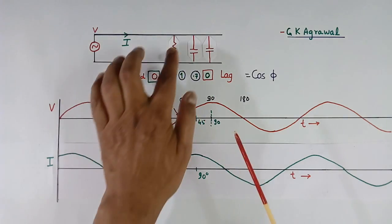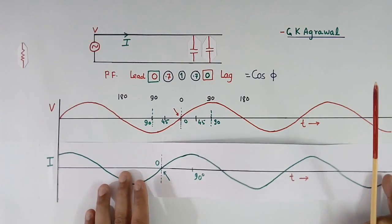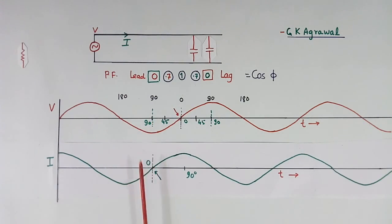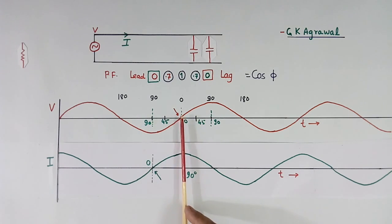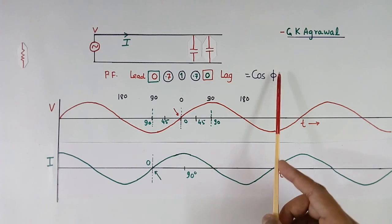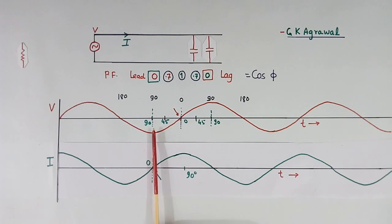Now suppose we remove the resistor. Then the current will shift further, and the angle difference will be 90 degrees — voltage zero crossing here, current zero crossing here. Cos 90 will be 0, so power factor will again be 0.